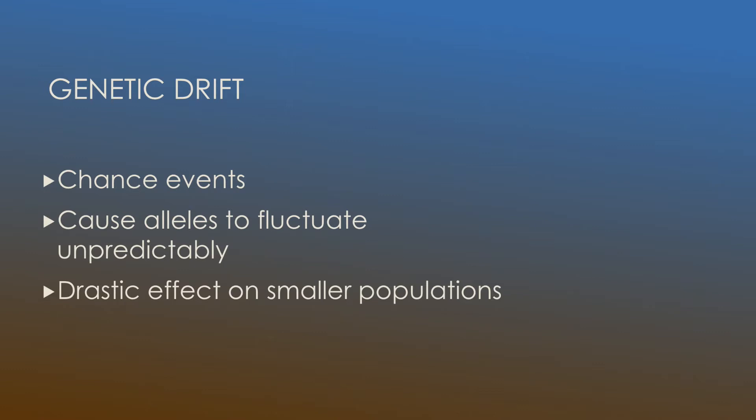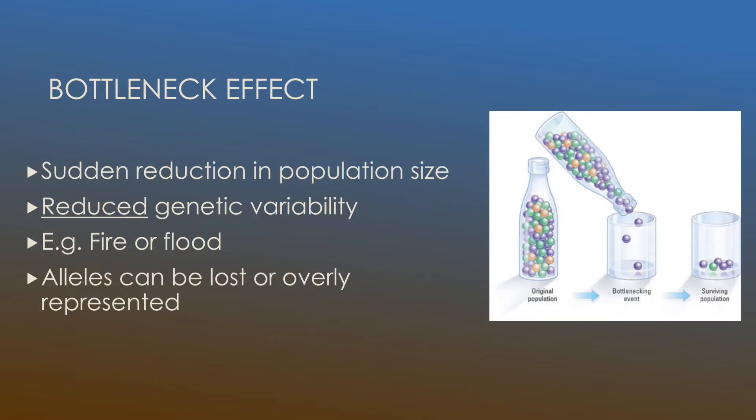So there are two types of genetic drift: the bottleneck effect and the founder effect. We're going to start with the bottleneck effect.